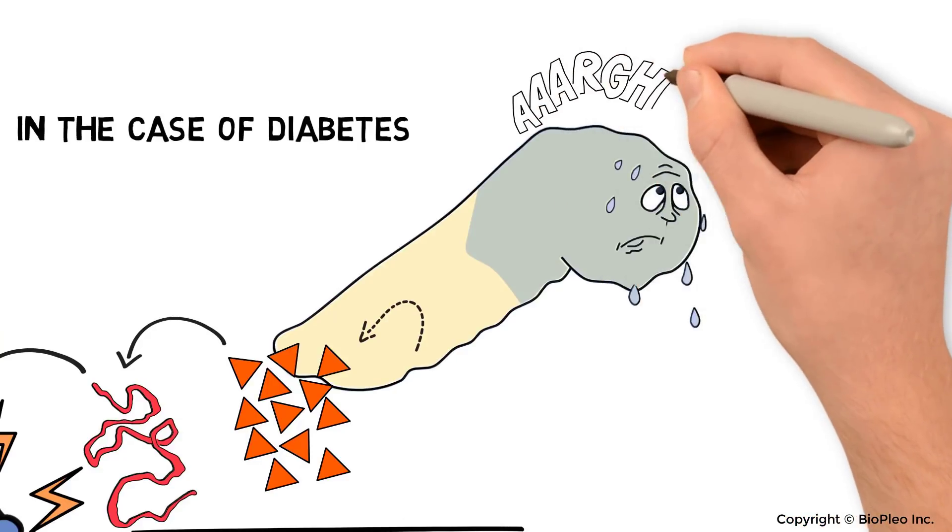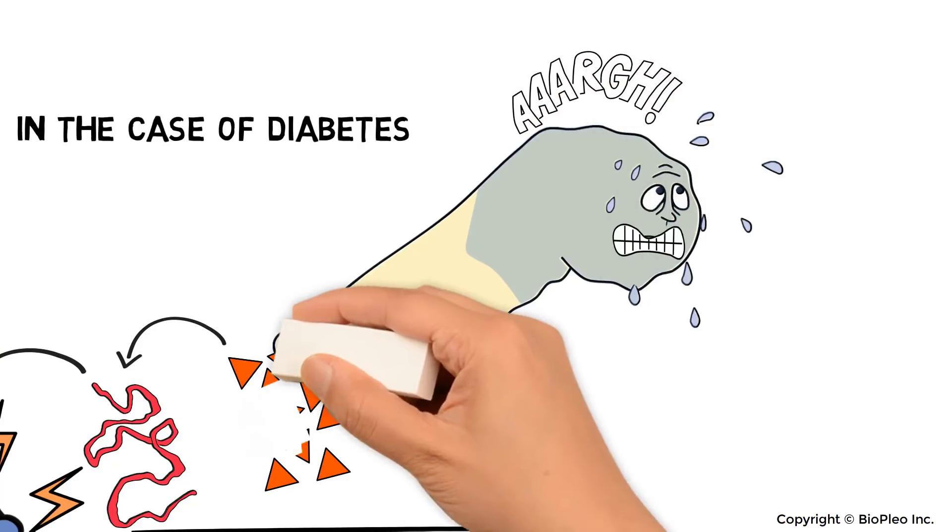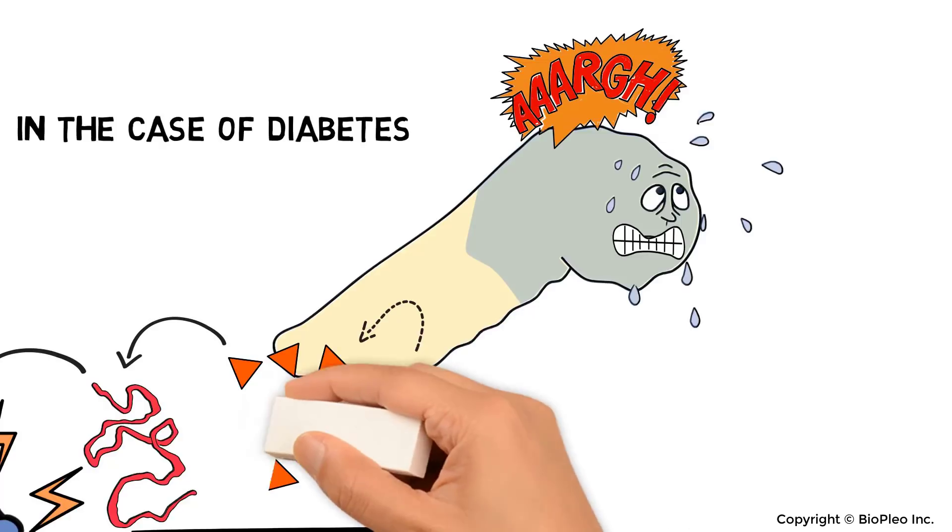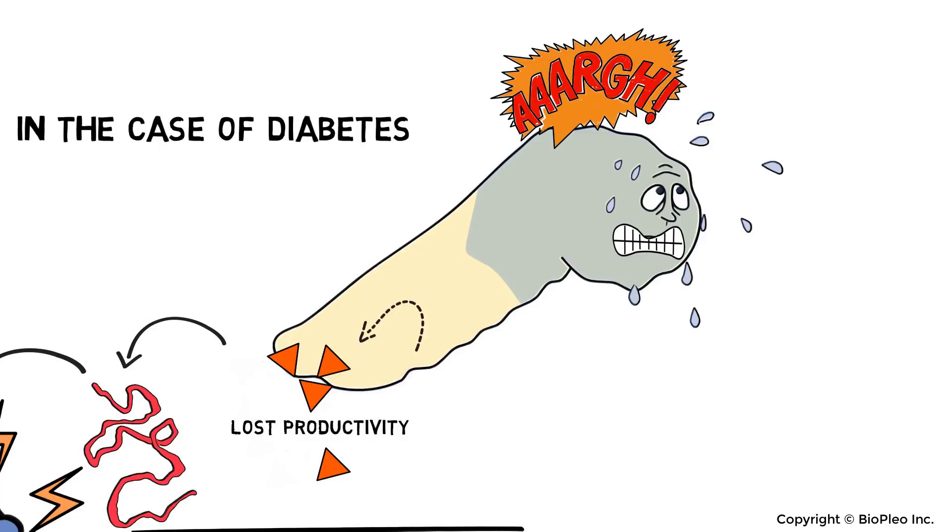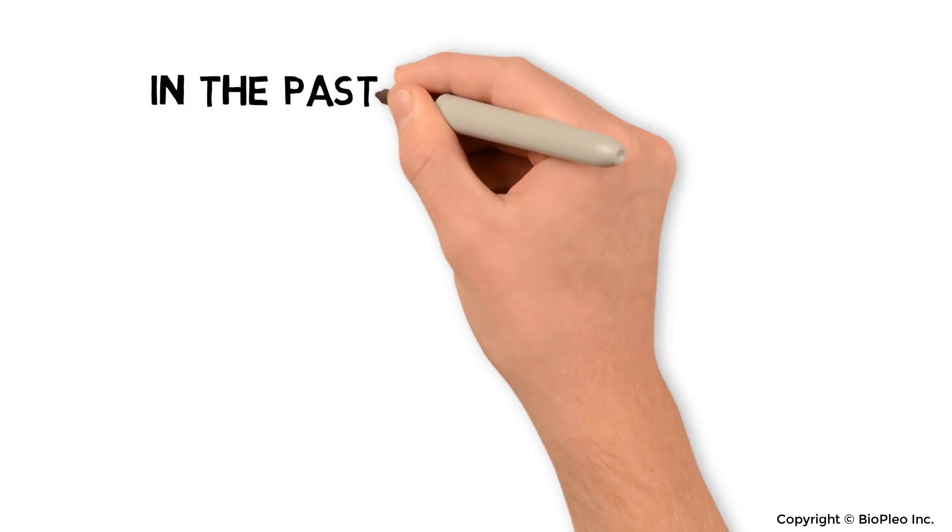Even worse, the stress levels in the surviving beta cells will increase intensely, as they must work harder to compensate for the lost productivity, and consequently, they die at an accelerated rate.